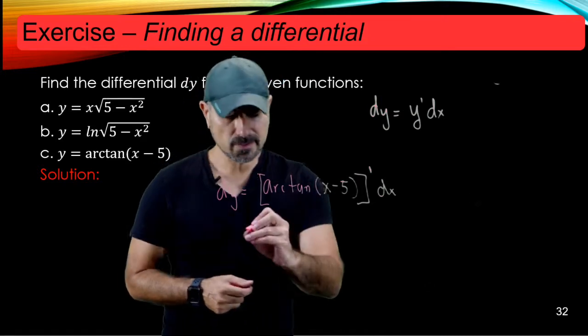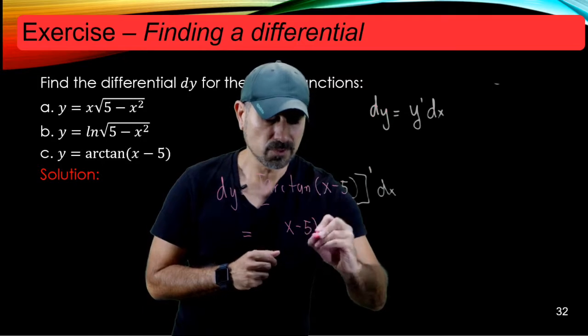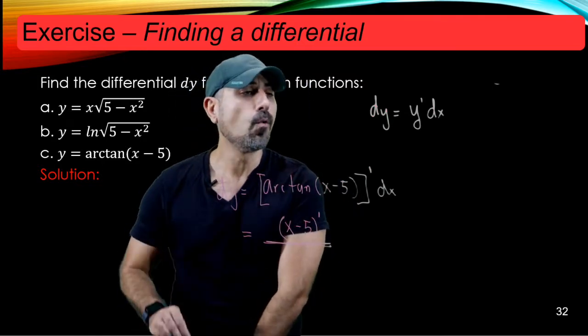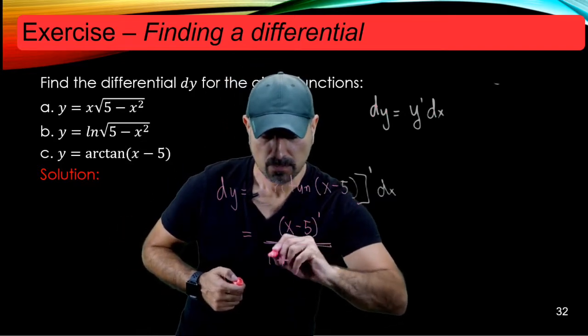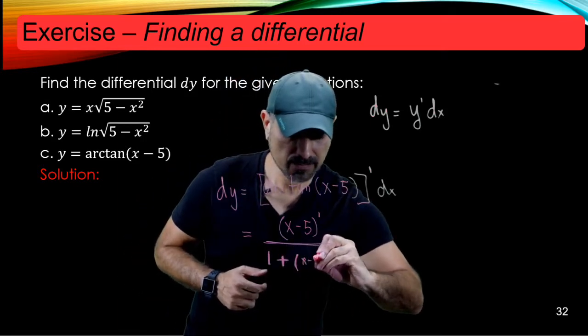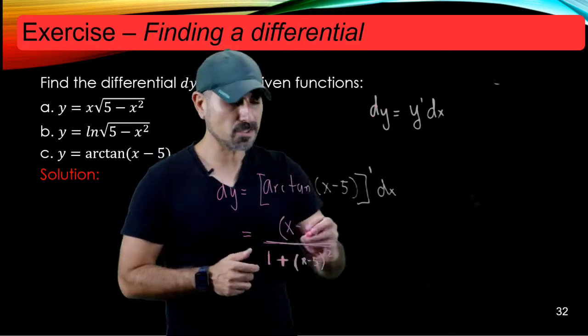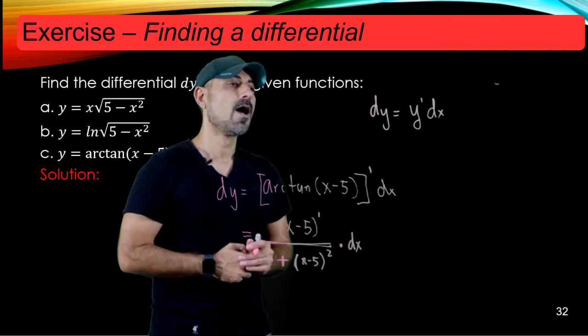So dy is going to be arctan x minus 5 prime dx. Okay, the derivative of arctan is like this. So the derivative of the inner function, so which is x minus 5 prime, and divided by 1 plus x minus 5 squared. And this is multiplied by dx.